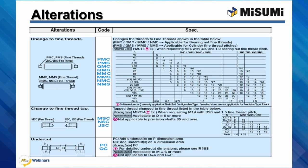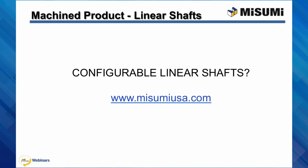Misumi also offers an additional alteration that adds an undercut to the threaded portion of a shaft. Alteration availability is dependent upon the shaft type and size. Let's visit Misumi's website and show an example of a configured shaft.